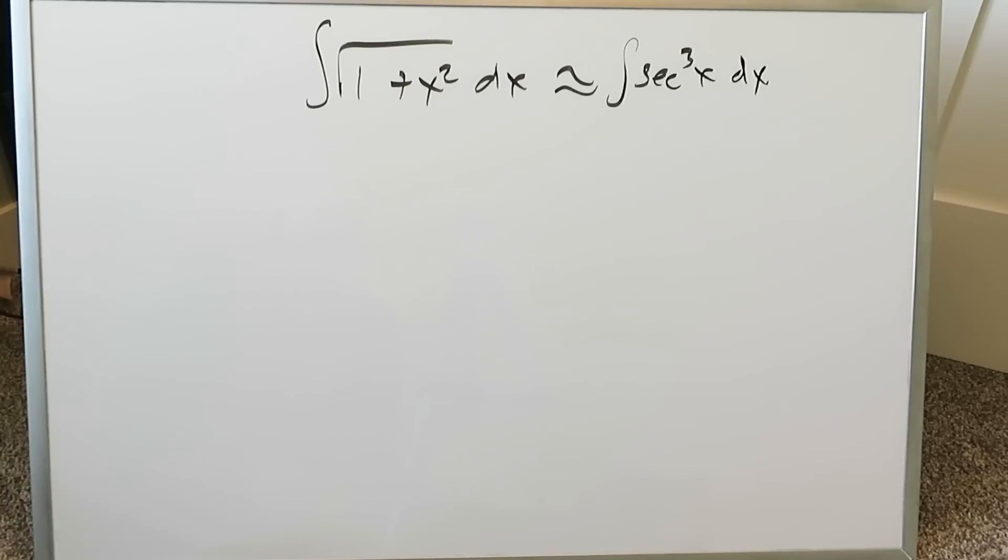I have that secant cube x because when you handle this using the typical trigonometric substitution route you will end up with secant cube x. Most calculus students will normally take this approach out of familiarity.